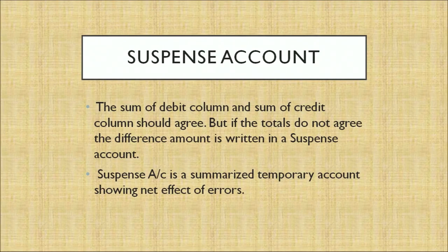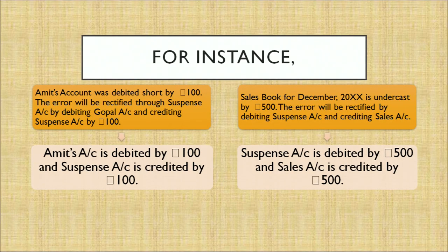The sum of the debit column and the sum of the credit column should agree. But if the totals do not agree, the difference amount is written in a suspense account. The suspense account is a temporary account showing the net effect of the errors. For example, if we are unable to locate the error, the amount is posted to a suspense account. The correct approach is to find what amounts are in the suspense account and park them into the correct books of accounts. For instance, if Amit's account was debited short by Rs. 100, we rectify it by debiting Amit's account and crediting the suspense account by Rs. 100.